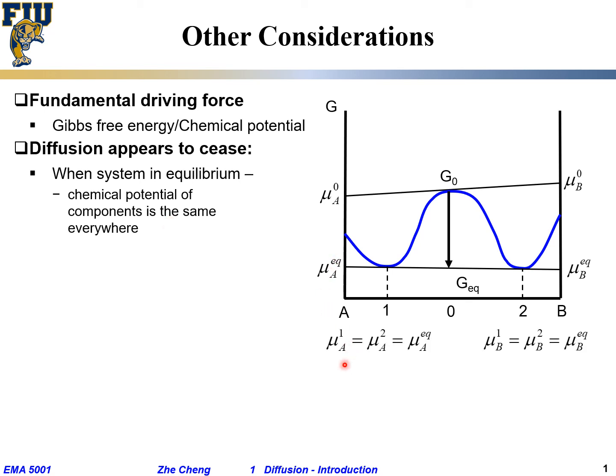That's what we said. μ₁ᴬ means chemical potential for A element in phase one is the same as the chemical potential for A element in phase two, or region two. Equals equilibrium.